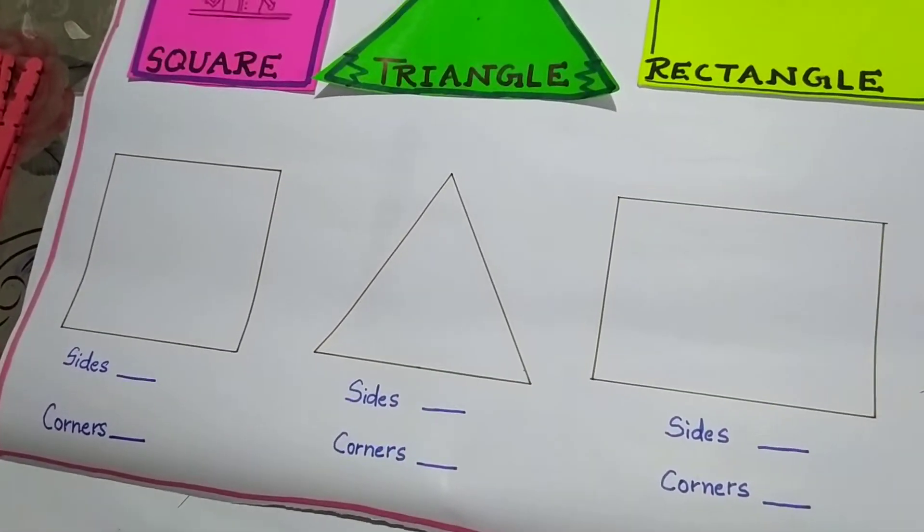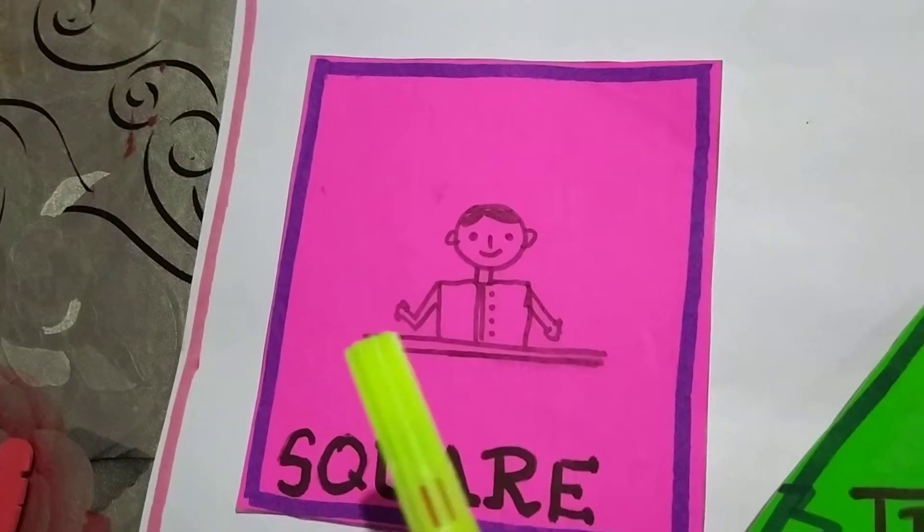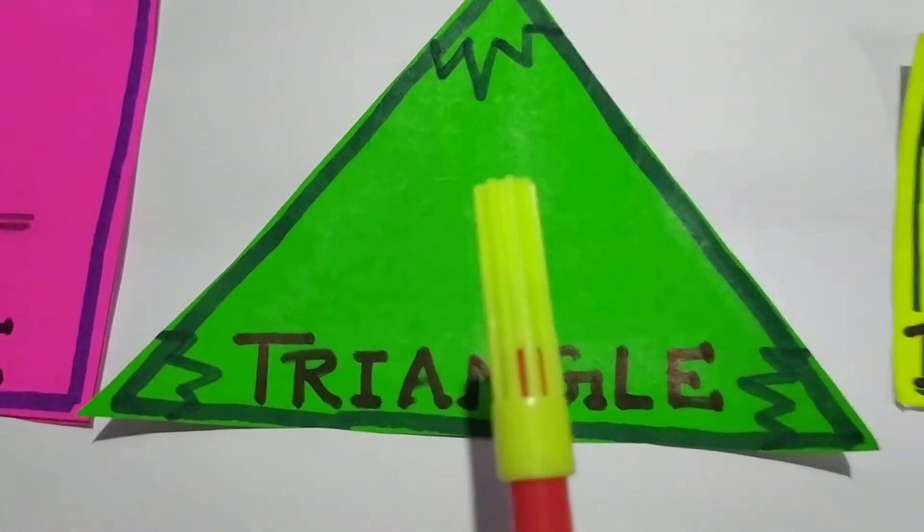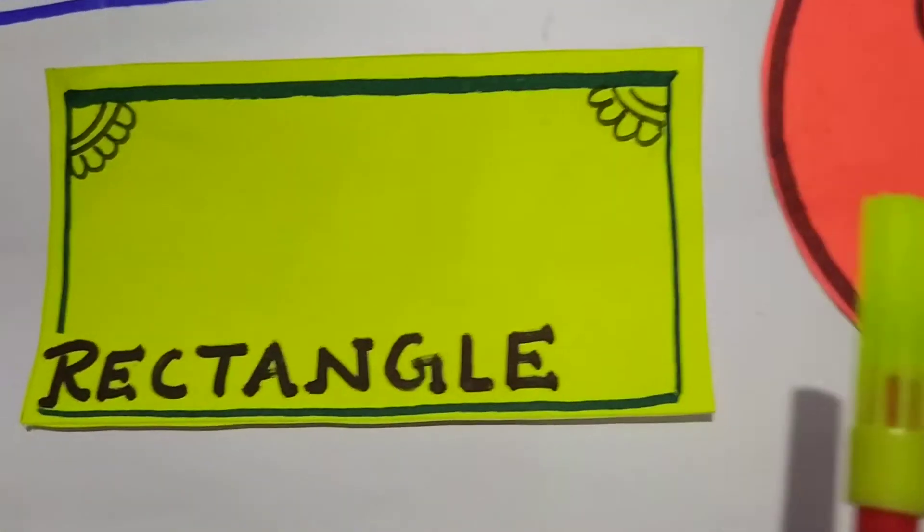First, let's revise the name of shapes. This is a square, a triangle, a rectangle and a circle.